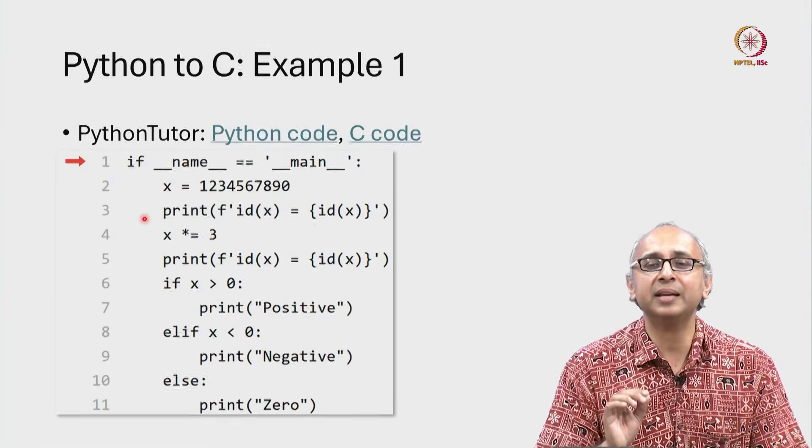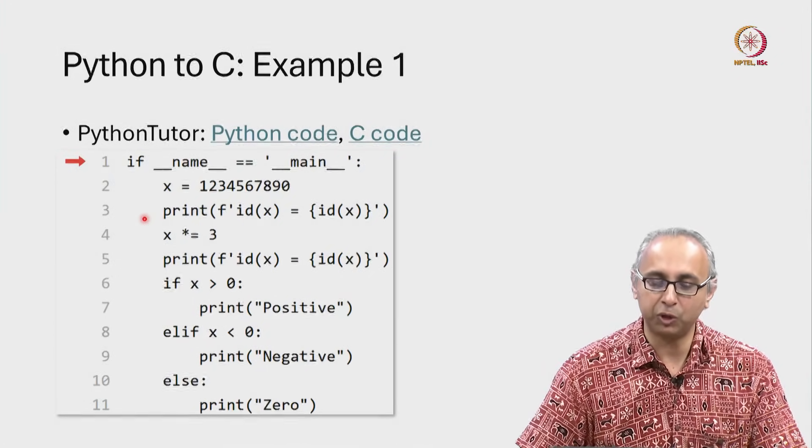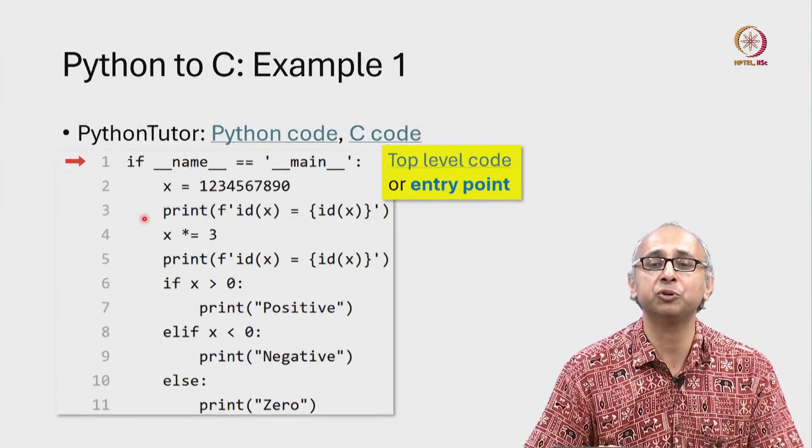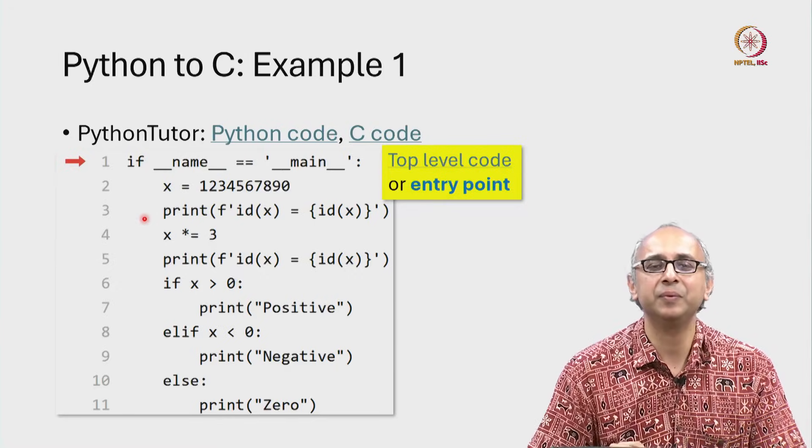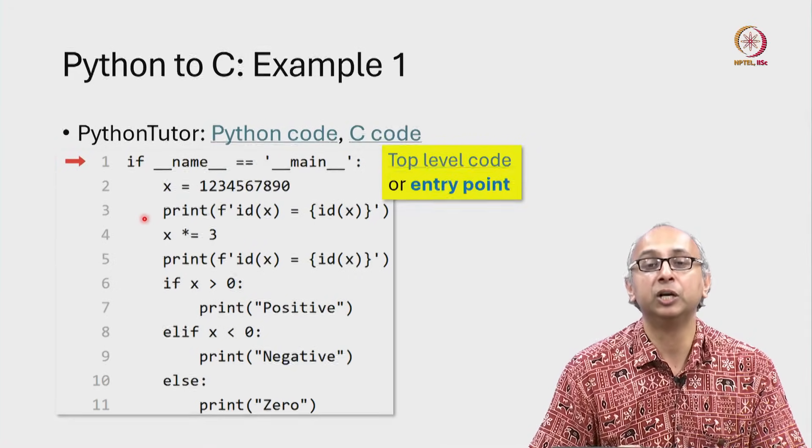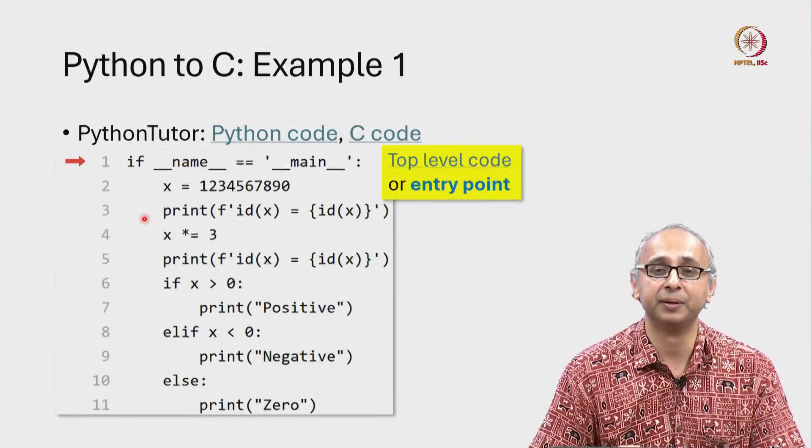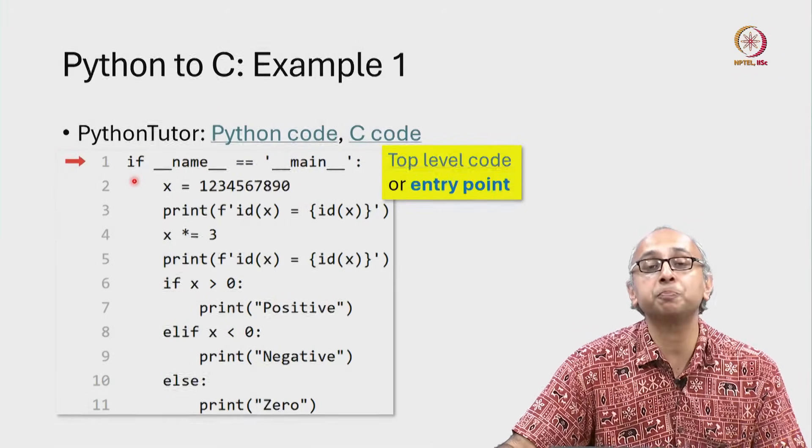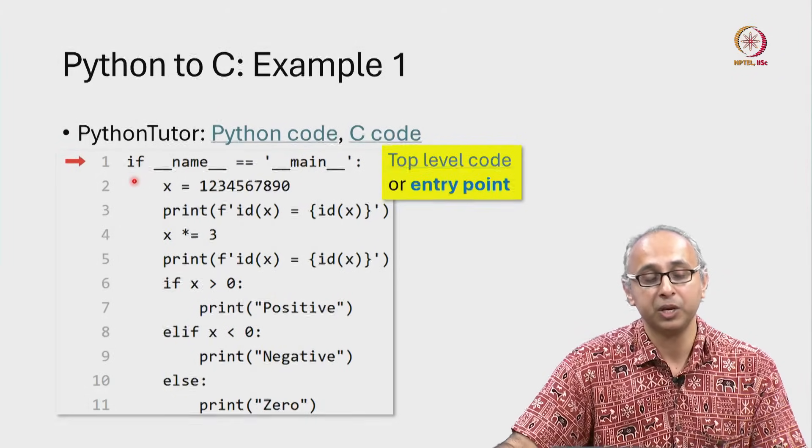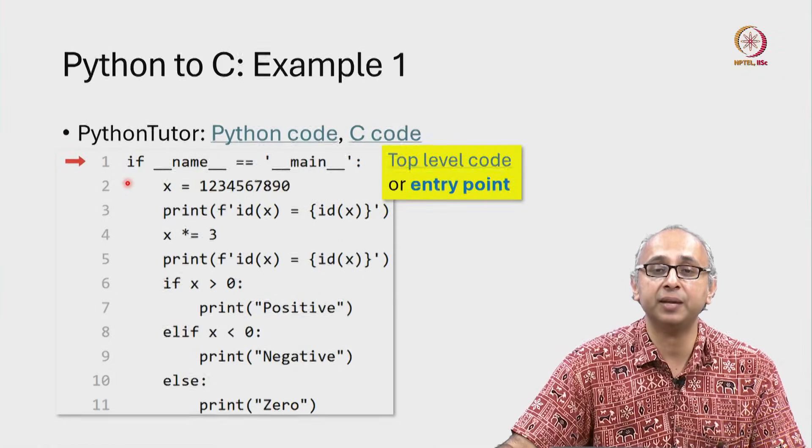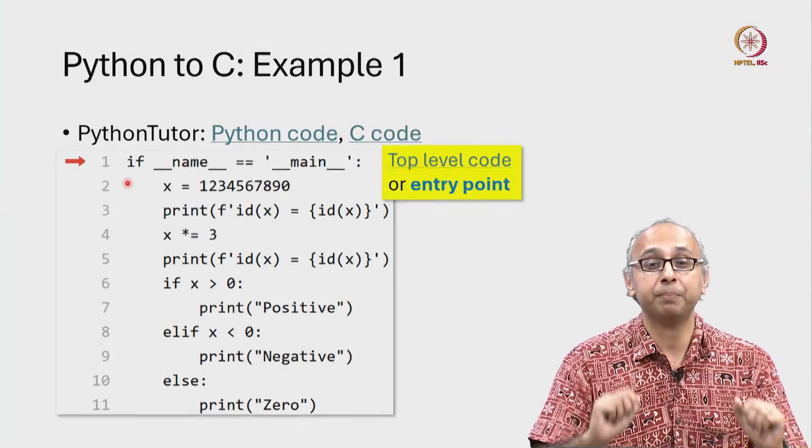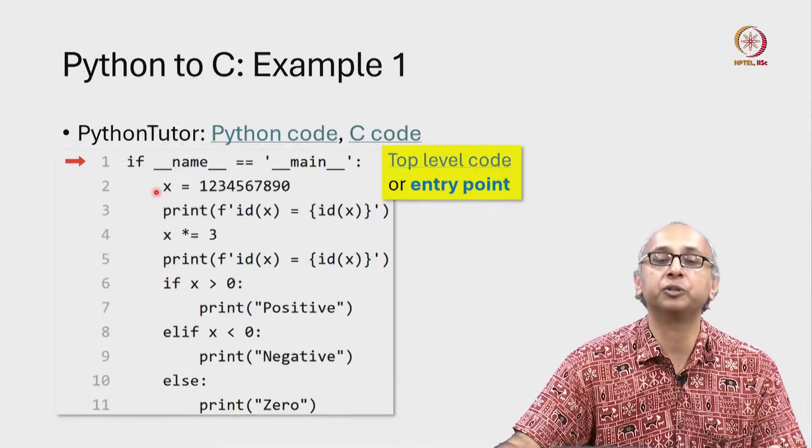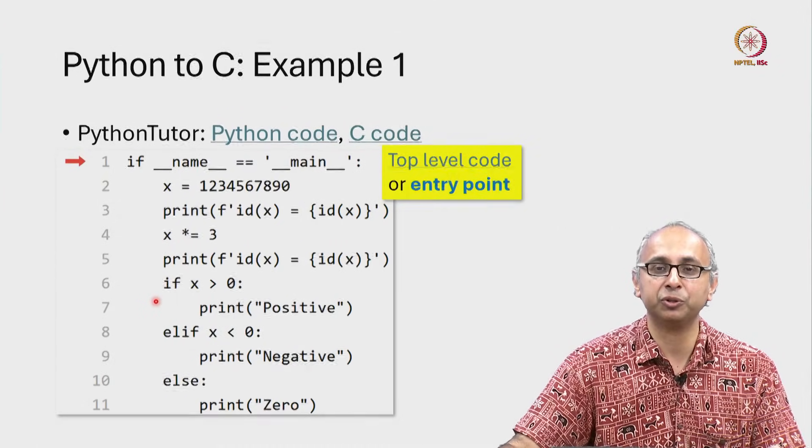It turns out that that style of writing what we call the top level code or the entry point into the execution of the code is not really a good programming style in Python. It's better to indent that code and put it inside this special if condition. This special if condition is saying that if the current Python program that is running is the main one, then we should start over here. This is the entry point into the whole program.